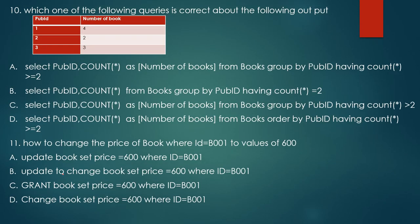Let's see which of the following queries is correct about the following output. Select publisher ID, count as number of books, from a focus group by publisher.